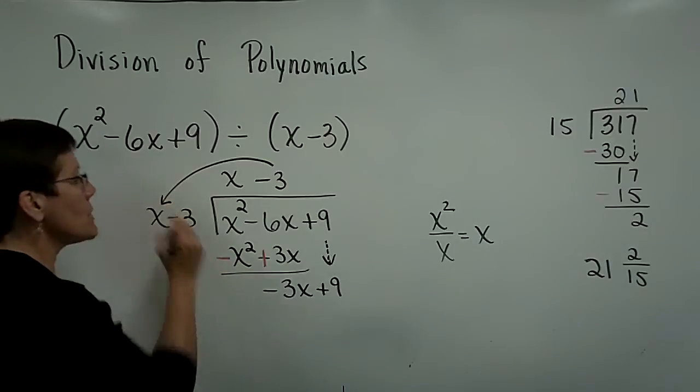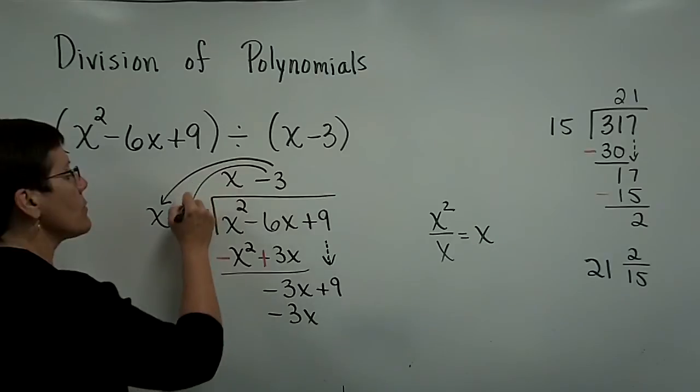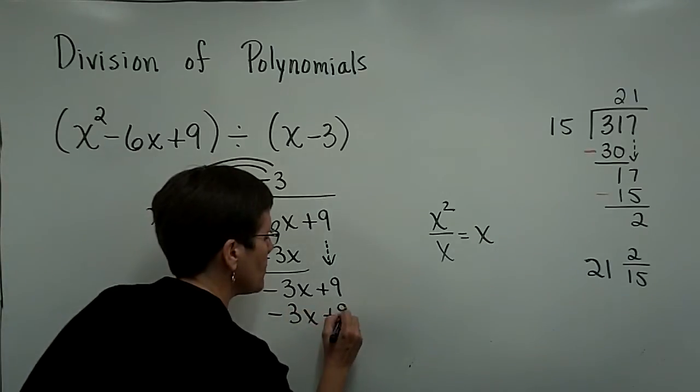And you would need a negative 3 here, because a negative 3 times x is a negative 3x. You want it to match exactly. And a negative 3 times a negative 3 is a positive 9.